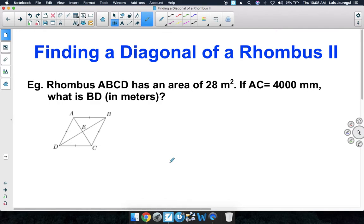Rhombus ABCD has an area of 28 square meters. If AC is equal to 4,000 millimeters, what is BD in meters?